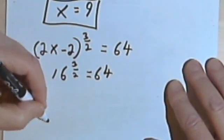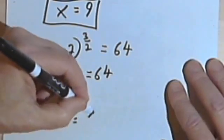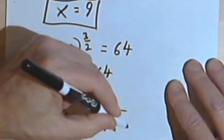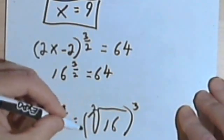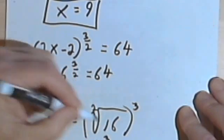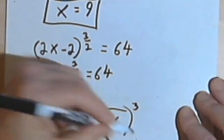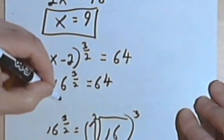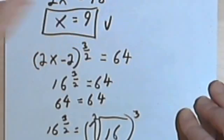Let's do that one. So 16 to the 3 halves would be the same as the square root of 16 cubed. Well the square root of 16 is 4, and 4 cubed equals 64. So I end up with 64 equals 64. So this answer checks.